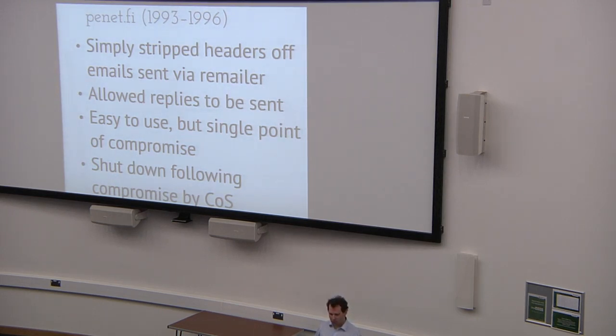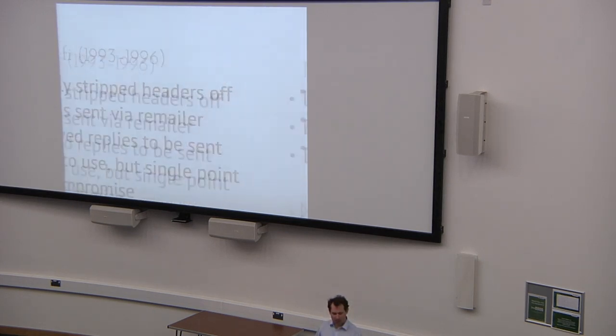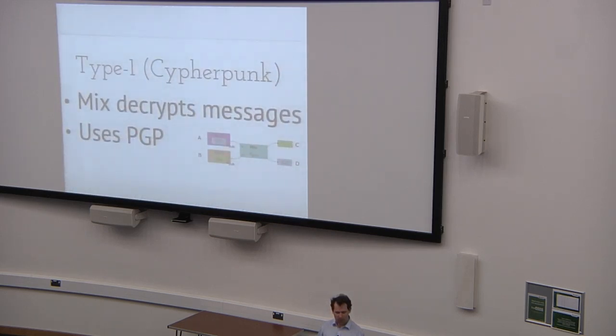But this is not the only vulnerability that these simple remailers have. The other one is that there's no encryption involved. So someone who is looking at messages coming in and going out of this remailer is trivially able to work out who's communicating with whom. And that's what led to one of the successor systems, sometimes called Type 1 Remailers, sometimes called Cypherpunk Remailers. And this works in a similar principle, but it also incorporates encryption.